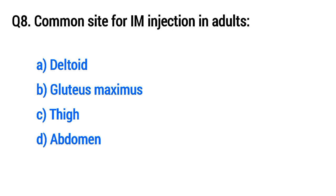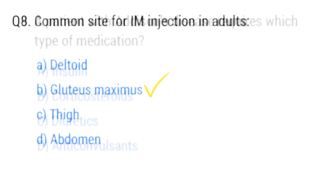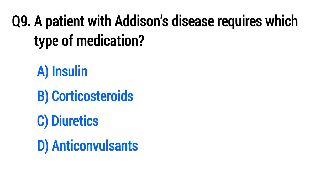Question No. 8: Common site for IM injection in adults. The right option is B, gluteus maximus.